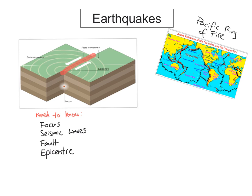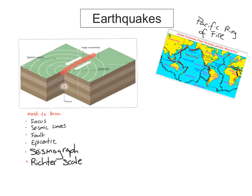When an earthquake happens, it releases seismic waves, and these are recorded on the seismograph. The Richter scale records the size of the shock waves. If an earthquake happens out in the ocean and is large enough, it will produce a tsunami — a tsunami is when water is displaced because of a huge earthquake, creating a gigantic wave that can reach the coastline with devastating effects, like in Southeast Asia in 2004.